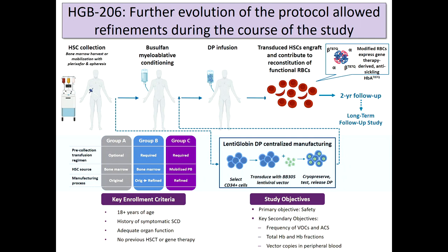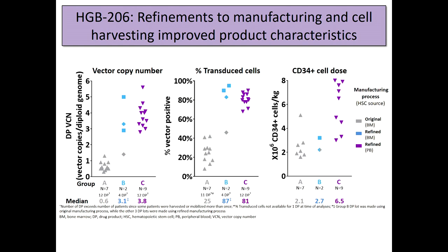The Bluebird Bio-sponsored trial is now open in many centers. We started this with about 10 adults with severe disease. It was primarily a safety study, but we had key efficacy endpoints. We looked at results in real time and made three adjustments. Group A used bone marrow with old transduction methods. In Group B, we started collecting with the mobilization agent plerixafor and refined manufacturing procedures. In Group C, we used mobilization and the refined manufacturing procedures.